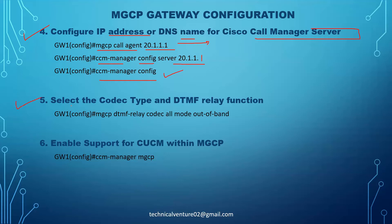Then we have the codec type and DTMF relay function. We need to select the codec and DTMF relay — whether to use out-of-band or in-band signaling. The command is 'mgcp dtmf-relay codec all mode out-of-band'. This means it will use all codecs and the mode will be out-of-band. This out-of-band signaling is used in the DTMF relay function.